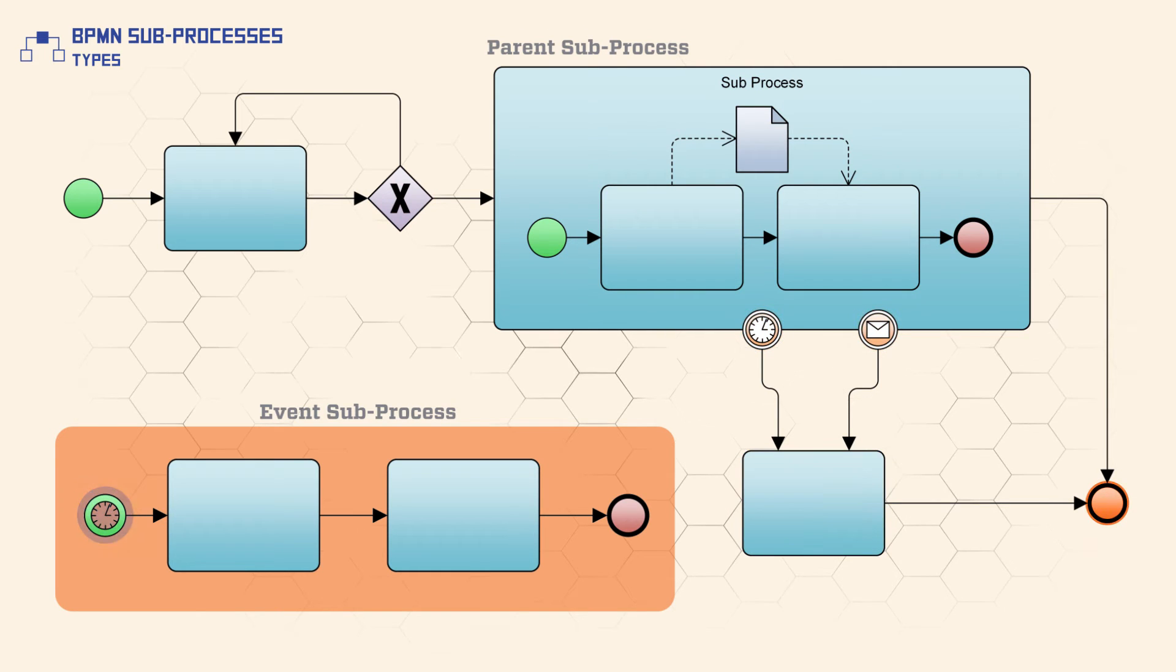This is determined by the type of start event used: interrupting or non-interrupting. An event subprocess should be drawn with a single thin dotted line.